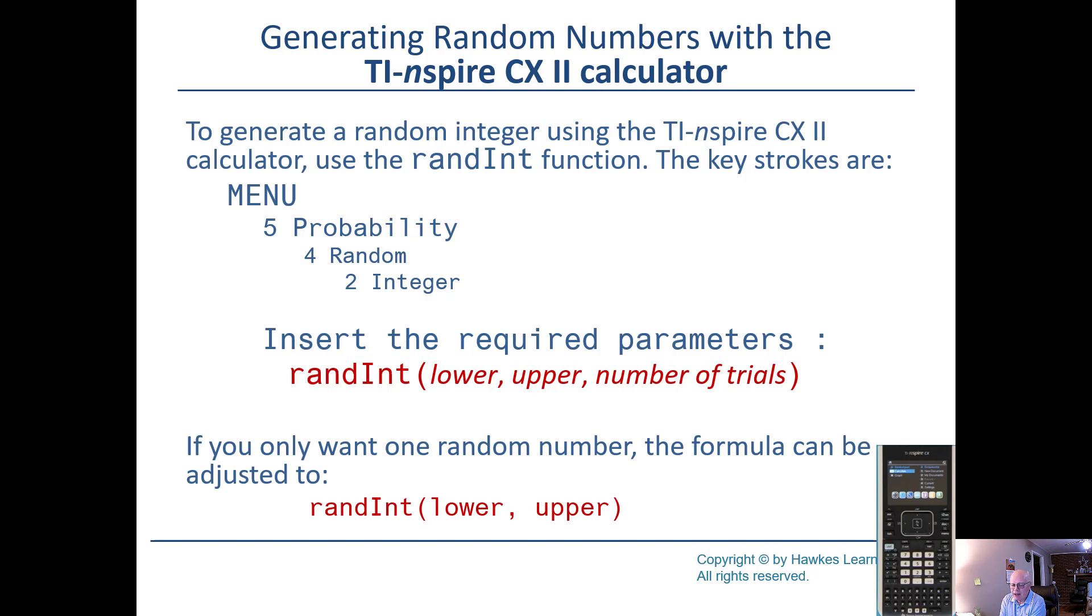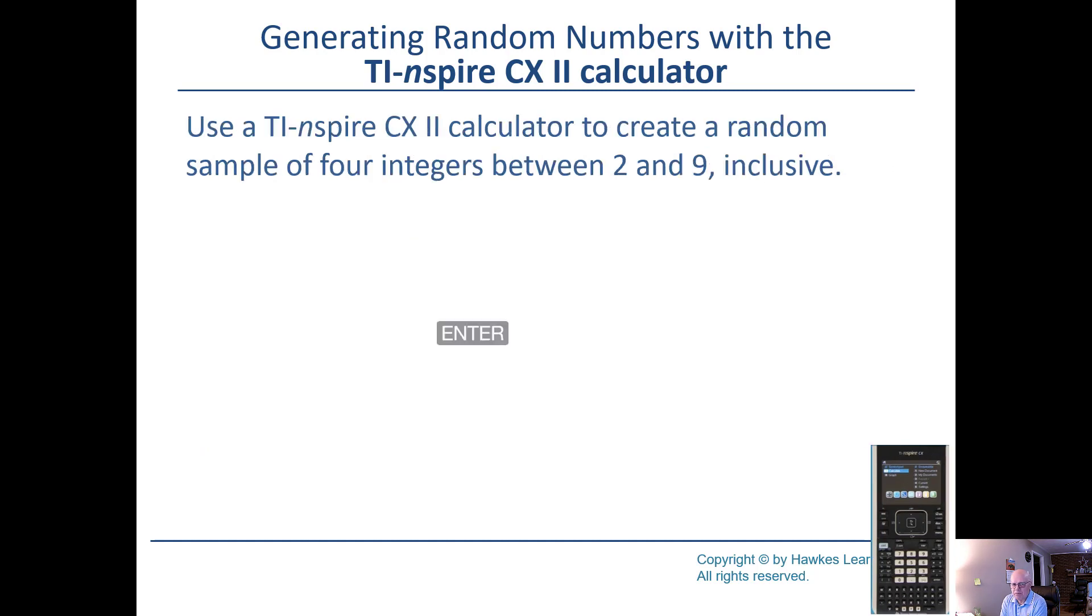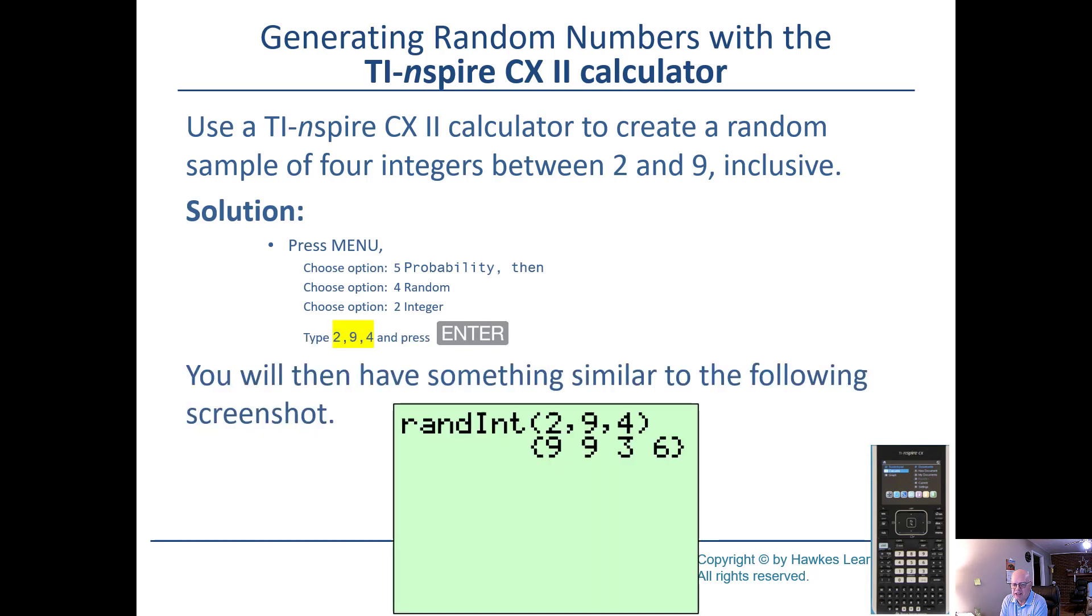And, just as in the other one, if you follow there, if you only want one random integer, you don't need to put it in the third parameter. Here, we've got just a slightly different version, but it's actually doing the same thing.